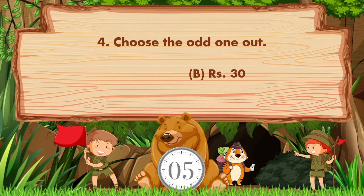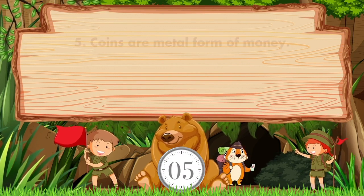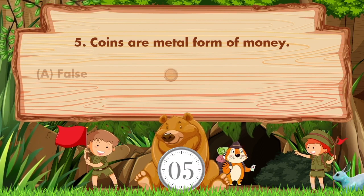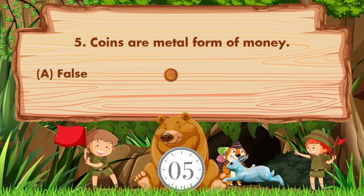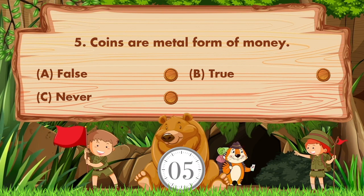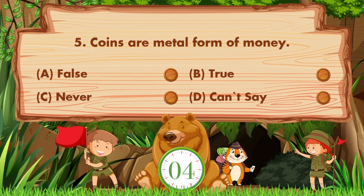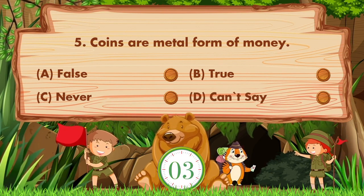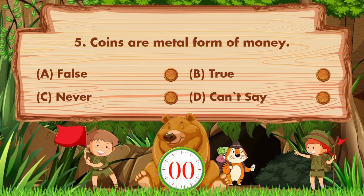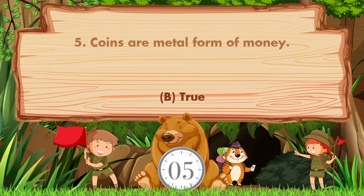The answer is option b: 30 rupees. Coins are the metal form of money. Option a is false, option b is true, option c is never, option d is can't say. The answer is option b: true.